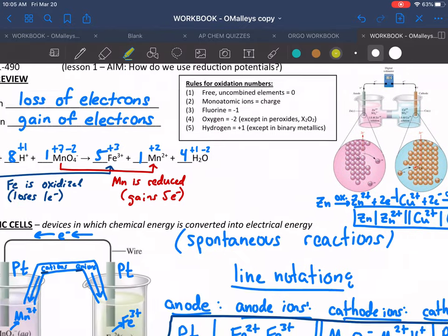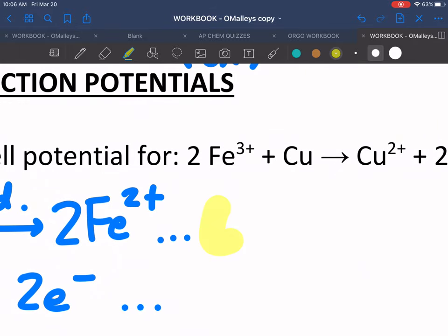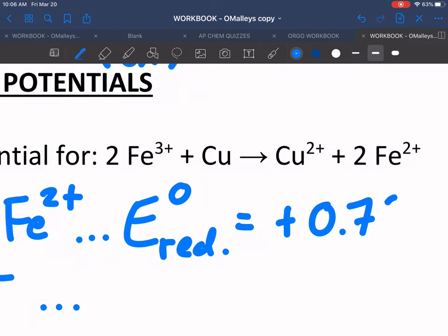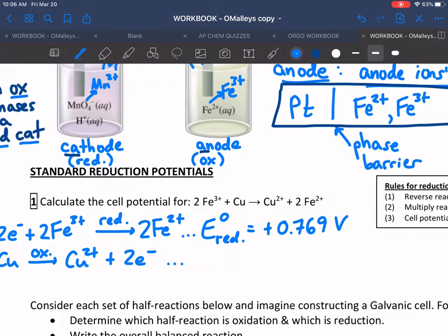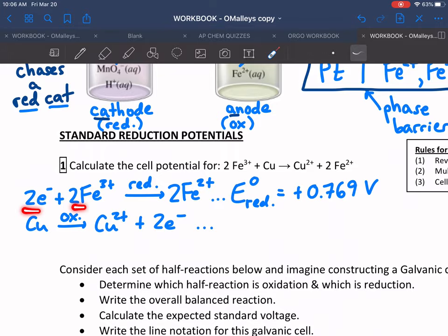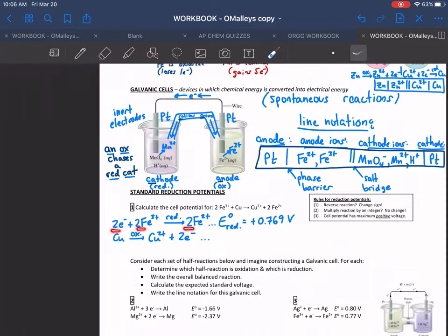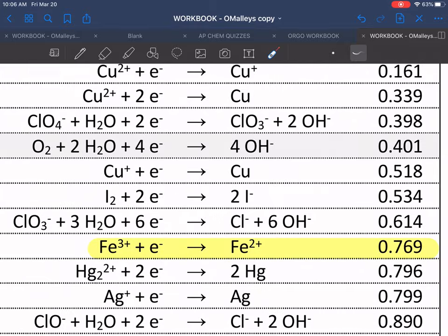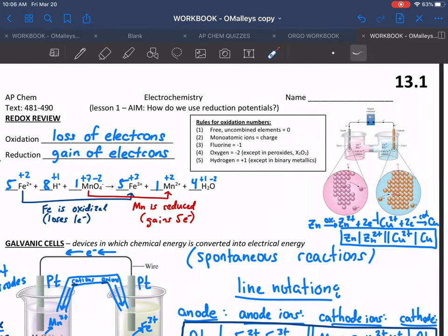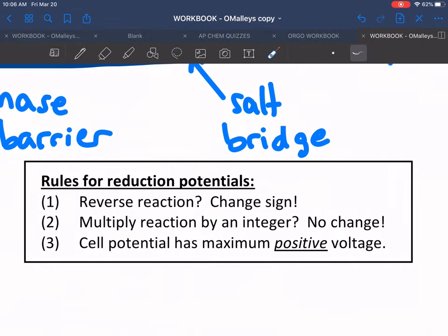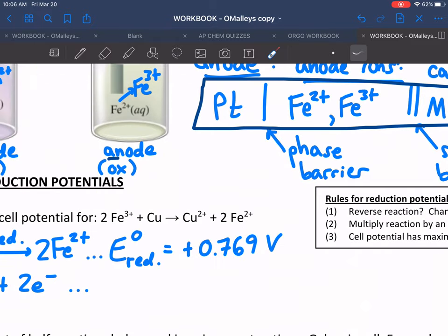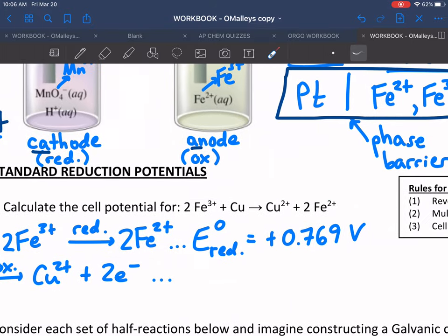So the reduction potential E standard for reduction is positive 0.769 volts. Now wait a minute - we have 2s in front of everything here, and the reaction we just looked at was with coefficients of 1. No worries, that does not change. If we multiply a half reaction by an integer, there's actually no change. This is important to remember: the voltage goes with the half reaction regardless of the coefficients. It stays the same.